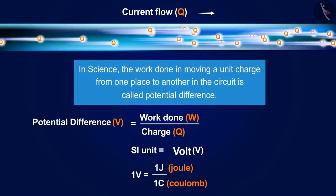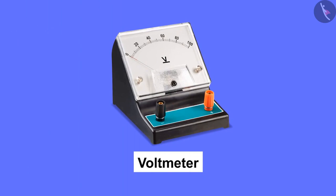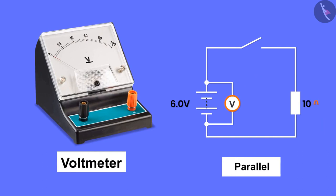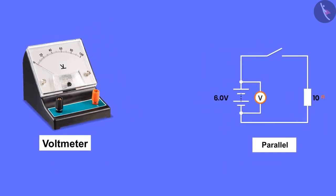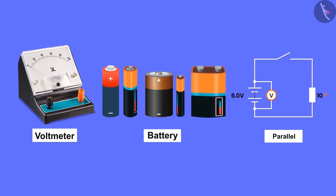The potential difference is measured with the help of a device called the voltmeter. The voltmeter is always placed in parallel or parallel order. Various kinds of batteries having variation in potential difference are available in the market.